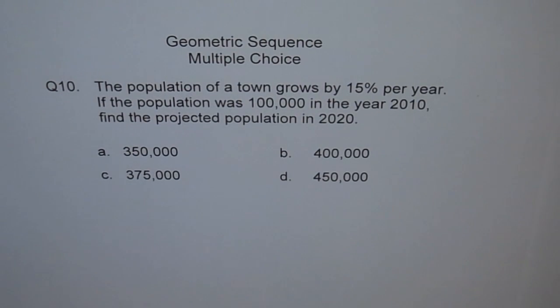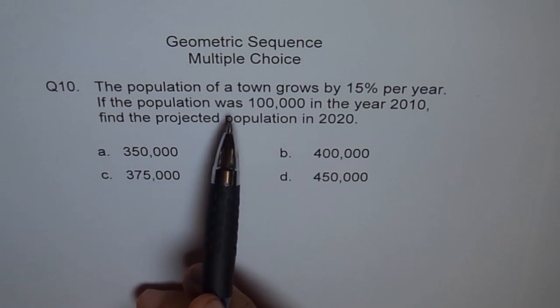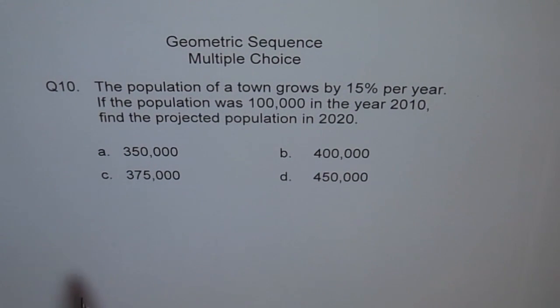Question 10 is the application problem of geometric sequence. The population of a town grows by 15% per year. If the population was 100,000 in 2010, find the projected population in 2020.